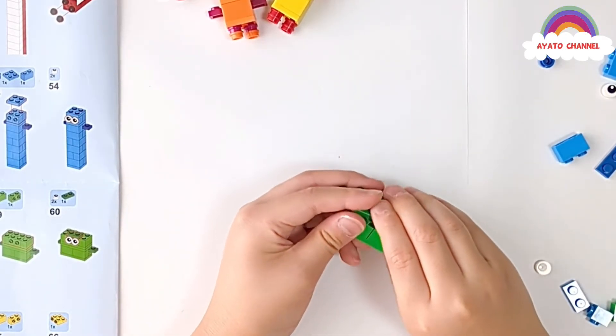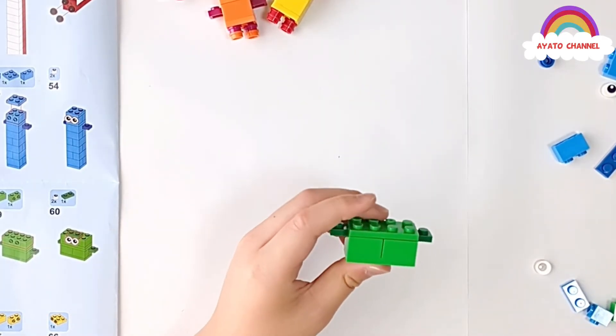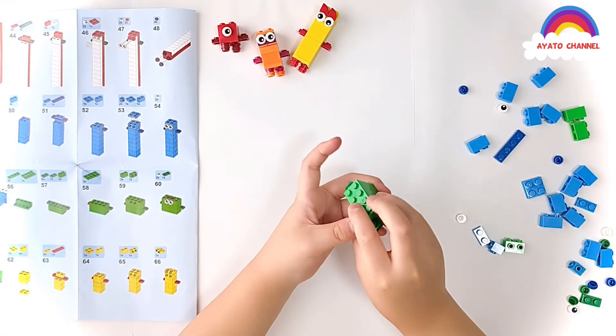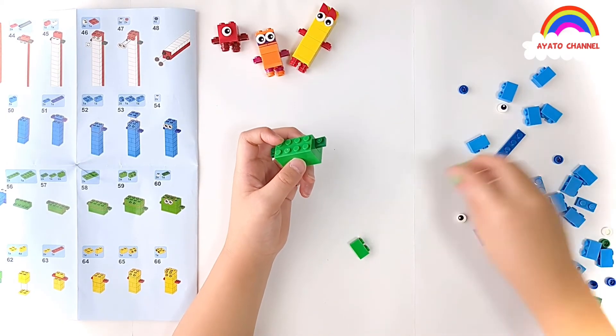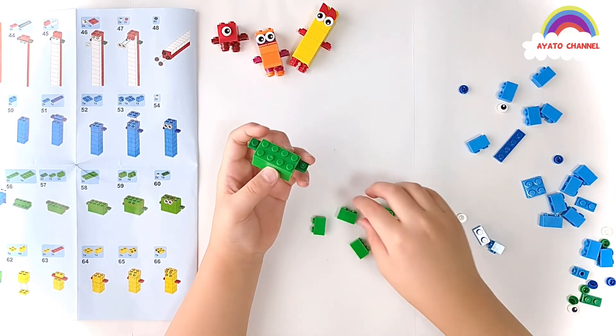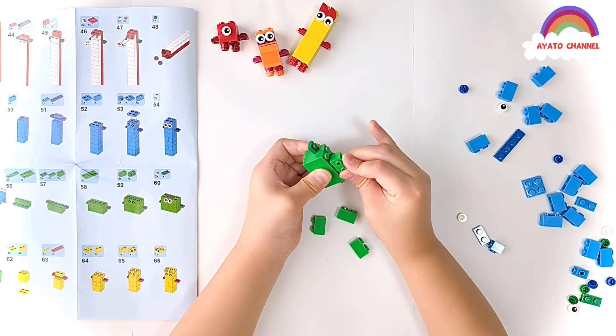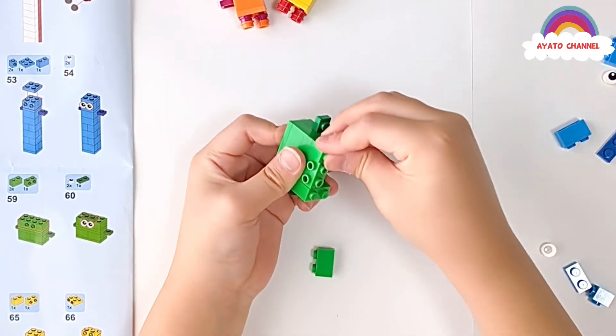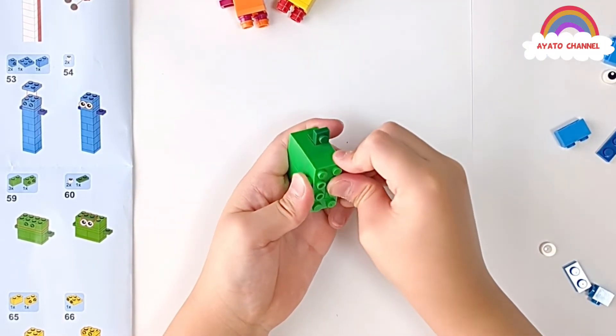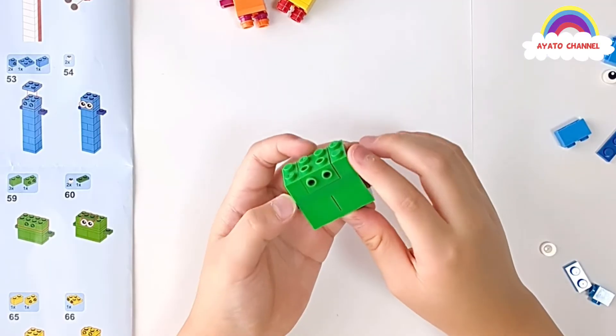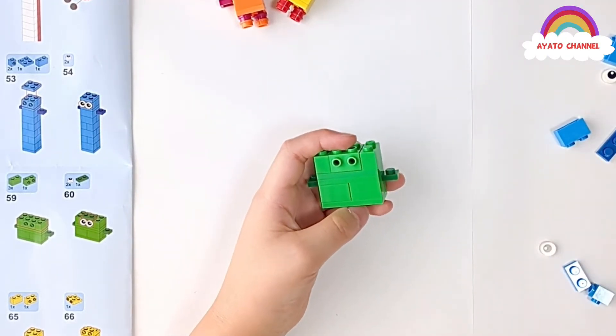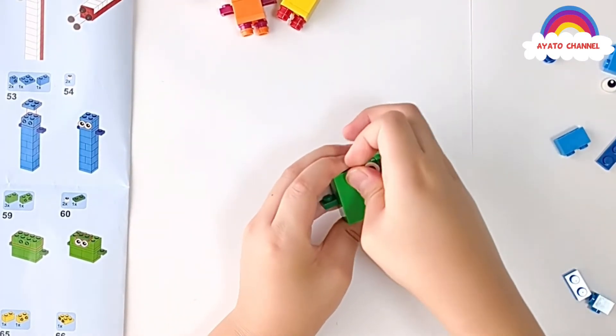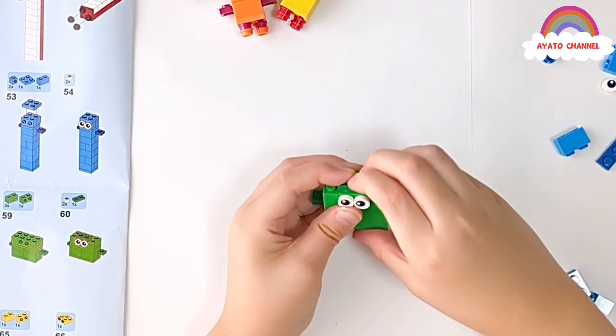So we need this. Put on here. Now next here. We need this and this. And put on here. And then put on here. So it's almost. Next. So we need eyes on here. And put on eyebrows.